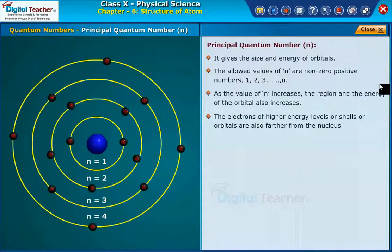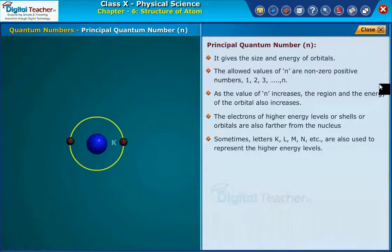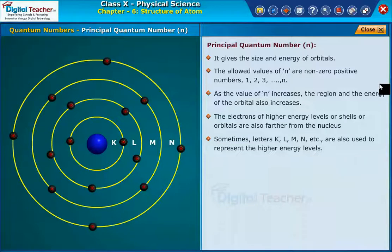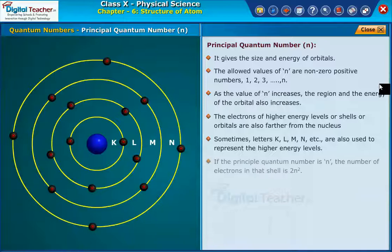The electrons of higher energy levels or shells or orbitals are also farther from the nucleus. Sometimes, letters K, L, M, N, etc. are also used to represent the higher energy levels. If the principal quantum number is n, the number of electrons in that shell is 2n squared.